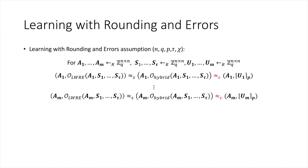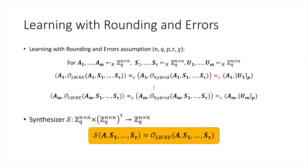Then, via a standard hybrid argument, we use LWE to switch each output of the hybrid oracle to uniformly random values. Using the LWRE assumption, we can naturally construct a synthesizer that takes matrix A and matrices S1 through S_tau and returns the output of the LWRE oracle on these inputs. The security of this synthesizer follows straightforwardly from the hardness of the LWRE problem.